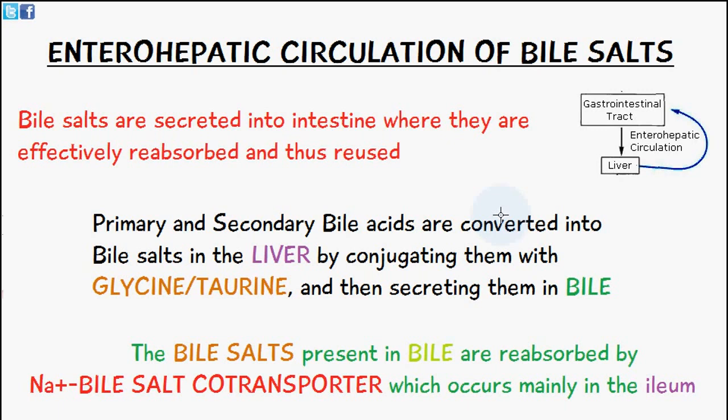Bile salts are secreted into the intestine where they are effectively reabsorbed and thus reused. Primary and secondary bile acids are converted into bile salts in the liver by conjugating them with amino acids known as glycine or taurine, and then secreting them in bile.